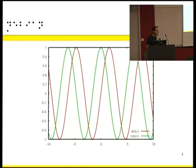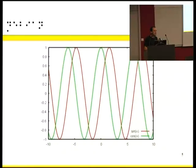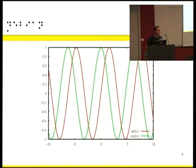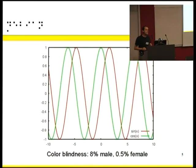A quick question: what do you think can pose accessibility issues here? What kind of problems do we have? It's graphical — there is a text version of Gnuplot, but what else? Colors, yes. I would like to know how many of you are colorblind — please raise your hand. So there are like three people out of maybe 15. That's a lot — 8% of male people are colorblind. So that's huge.